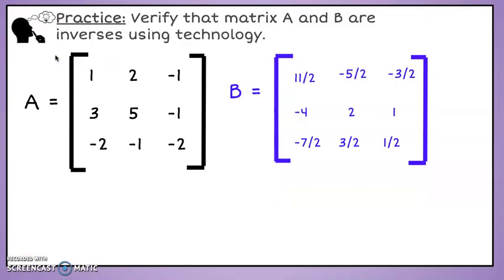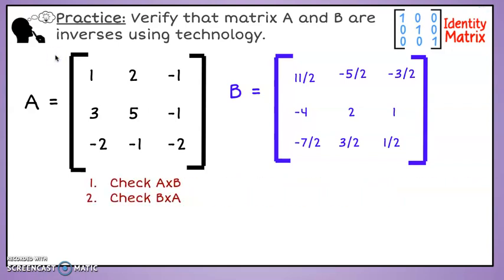Now let's use technology for a slightly different scenario. We will now verify that these matrices A and B are inverses. How might we check this? What do you recall about the product of inverse matrices from the beginning of this lesson? The result must be the identity matrix. The product should be verified for both A times B and B times A.